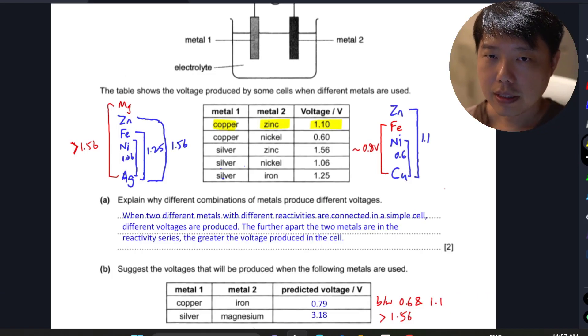They list out five combinations, and the first question asks why different combinations produce different voltages. This question is pretty easy - when you have different reactivity metals connected in a simple cell, you get different voltages because they have different electrode potentials. The further apart they are in the reactivity series, the greater the voltage.